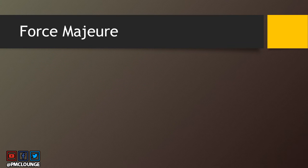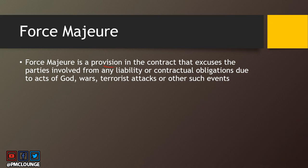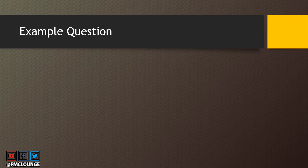Force majeure is basically a provision in the contract. This provision excuses the parties involved from any liability or contractual obligations due to acts of God, wars, terrorist attacks, or other such events. In the event of any natural disaster or a war breaking out, contractual obligations and any kind of liabilities are excused. This provision of excusing is known as force majeure.